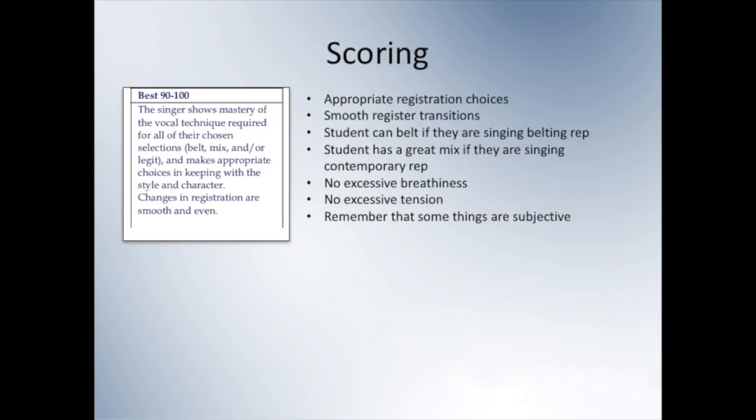Now let's review the NATS rubric and look at how these concepts can apply to adjudicating. In the category of Best, the NATS rubric says the singer shows mastery of the vocal technique required for all chosen selections and makes appropriate choices in keeping with the style and character. Changes in registration are smooth and even. You'll also want to make sure that if the student is singing a song that requires belting, they are in fact belting. However, you need to remember that they have the freedom to choose a modern or traditional take. So it would be possible for someone to sing 'I Hate Men' in the traditional head-dominant way and another student to sing it in the contemporary belt-dominant way — both could be considered acceptable as long as it seems like that was the student's deliberate choice.